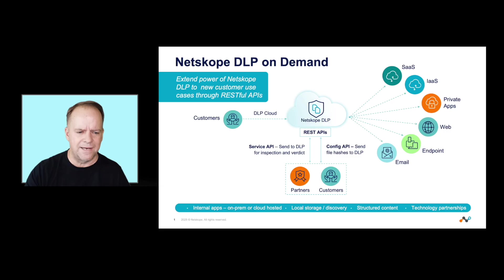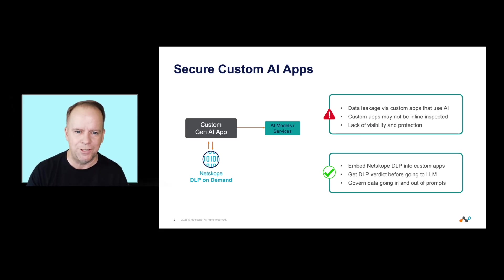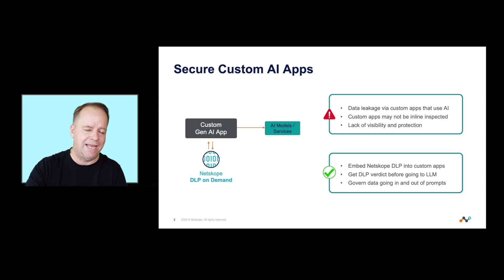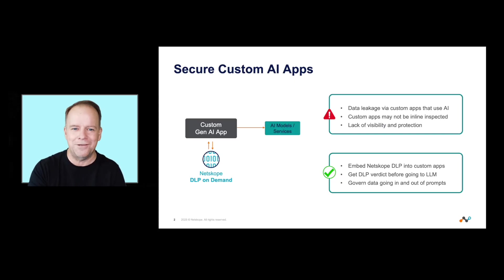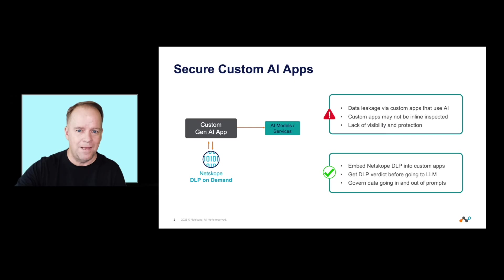Let's go ahead and give you one example. Let's say it is a custom AI application, and with a few lines of code built into your application, as the application is interacting with LLMs — you've got a chatbot functionality built into the application, as an example — data that is sent to the LLM can first go to Netscope DLP On Demand for a verdict.